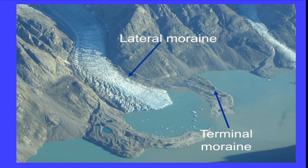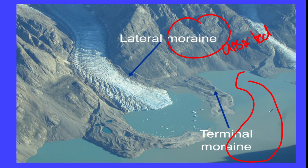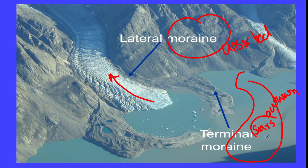The thing to know about moraines is that they contain unsorted material. Another depositional feature of a glacier is an outwash plain. An outwash plain is formed when the glacier melts at the end — melting causes the glacier to recede back up the mountain. As it melts, it all turns into water, and we know water actually sorts. So in terms of glacial depositional features: the outwash plain has sorted material and the moraines have unsorted material.